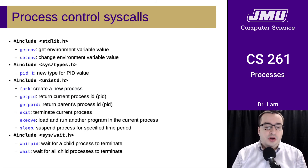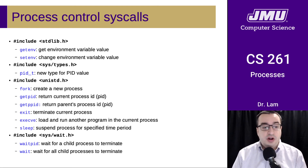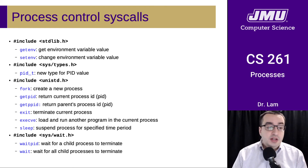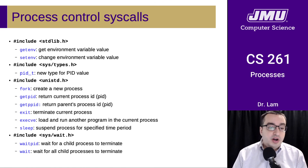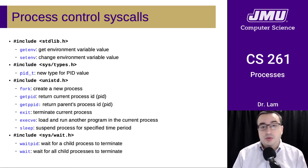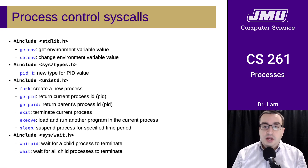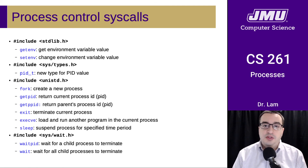These are the system calls provided for parents and children to manage processes. You need to include a couple of header files. There is a new type called pid_t, which is a PID value. There are a variety of system calls that create processes, return process IDs, terminate processes, and load other programs — which we'll talk more about in the next video — as well as sleeping processes to suspend them, or waiting for other processes to terminate. You'll need a couple of them for the lab, so it's worth looking at the documentation to determine what these functions do.